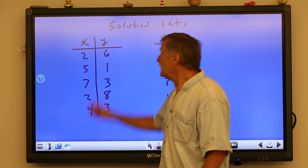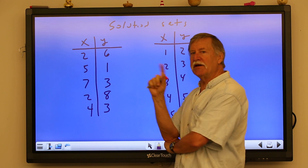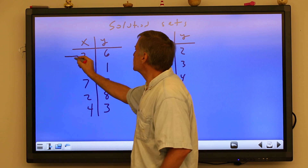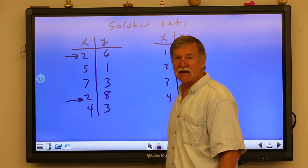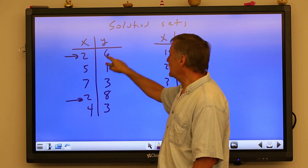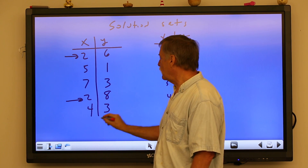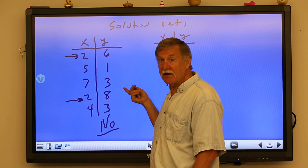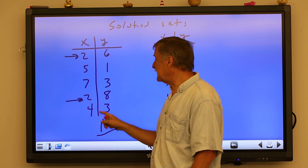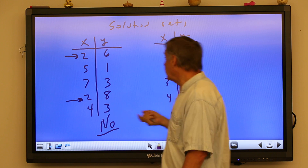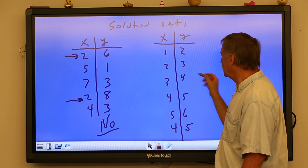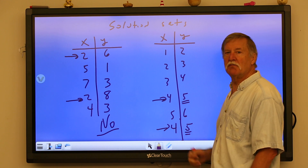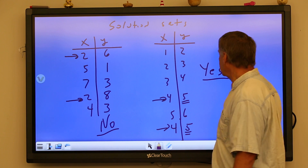Sometimes you're given solution sets and asked whether they represent a function. The key is: for every x value, there has to be exactly one y value associated with it. So when we have the same x value, do we always get the same y value? Here this x value goes with six but the same x value also goes with eight — no, not a function. But five with one, seven with three, four with three — it doesn't matter if more than one x shares a y value. When four appears again, it still only goes with five, so yes, this set represents a function.